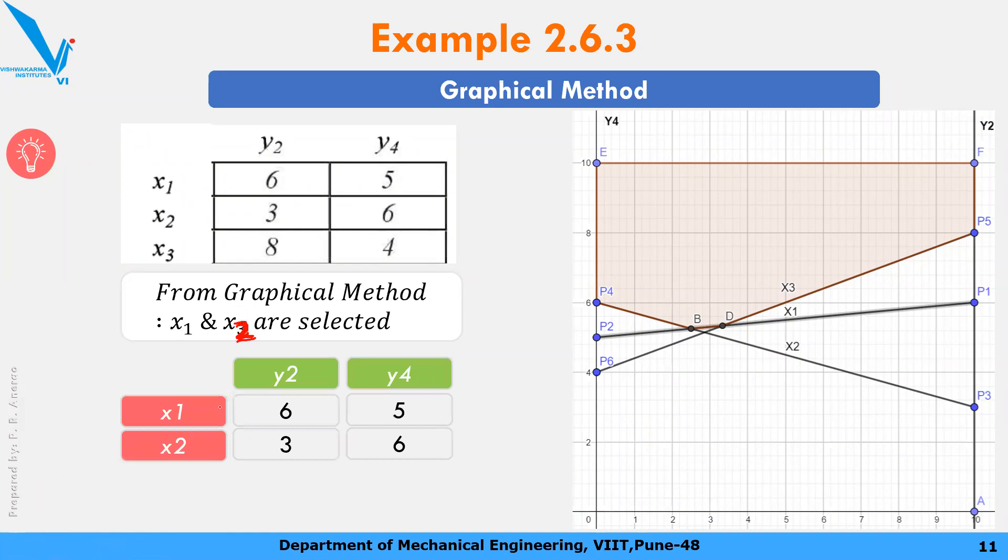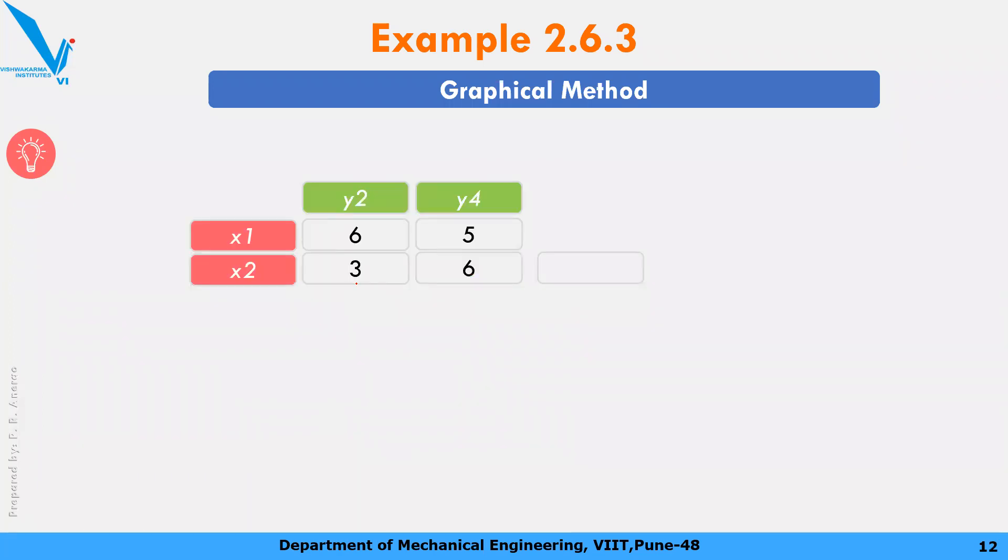So X1, X2. In the table, X3 is now not in the picture. And now see the game, it's a 2 by 2 game. And now we all can solve this game, 2 by 2. So we have prepared the game by eliminating X3. This is X1: 6, 5, and 3, 6. Let's go and solve this numerical. Again, I will repeat the process of shortcut method to solve 2 by 2 matrix or 2 by 2 game. Take the difference of 6 and 5, write it here, that is 1. Then take the difference of 3 and 6, write it in front of row number 1, that is 3.